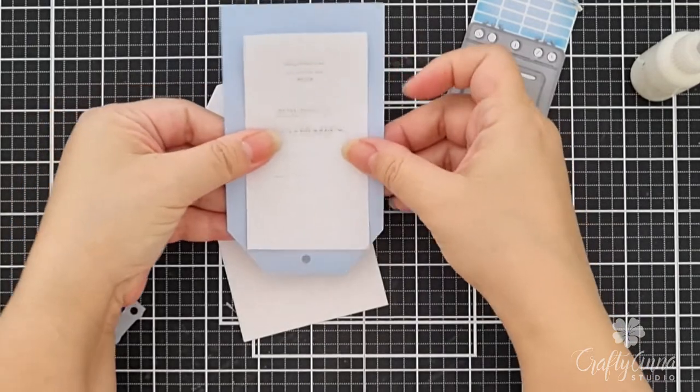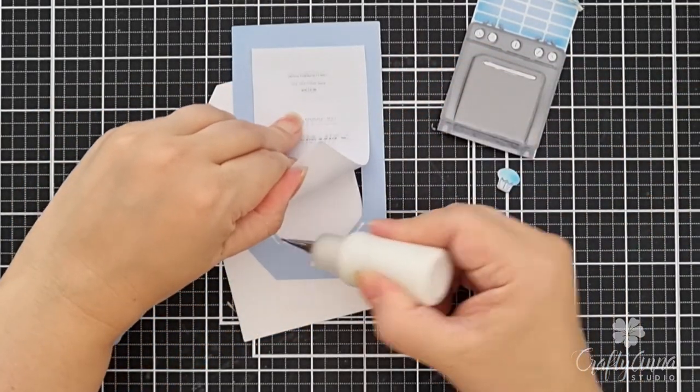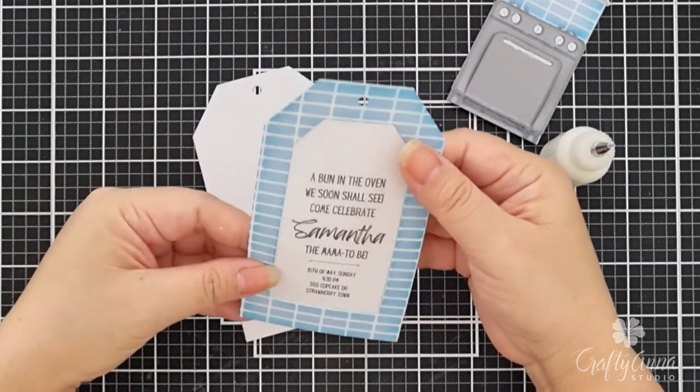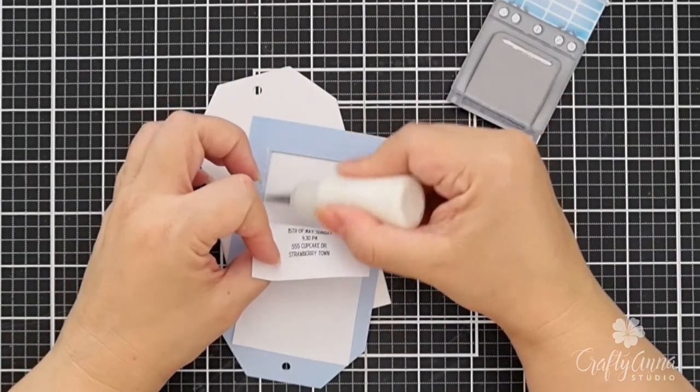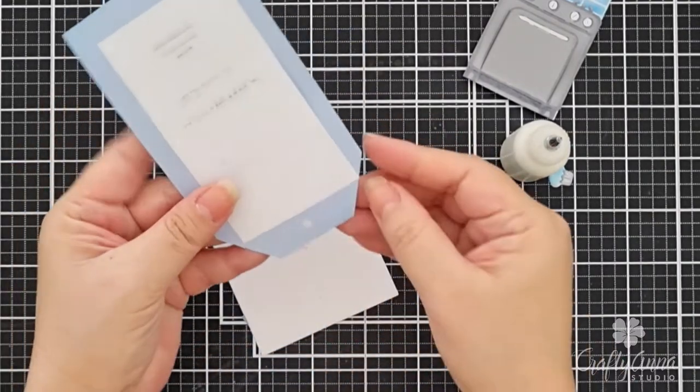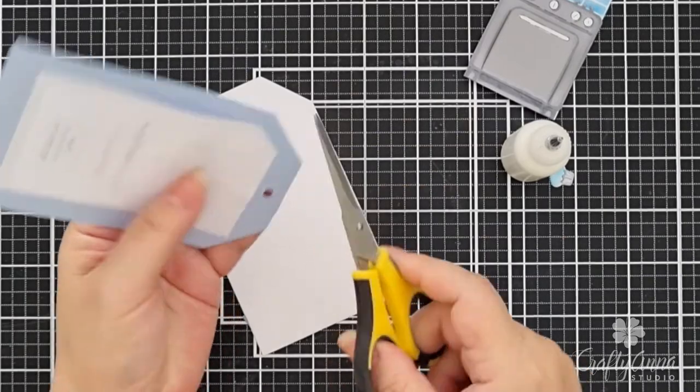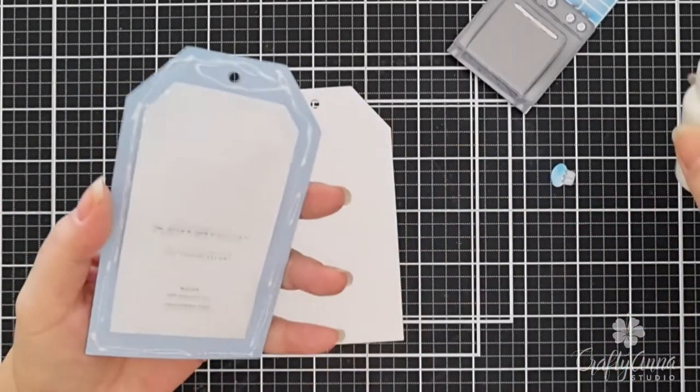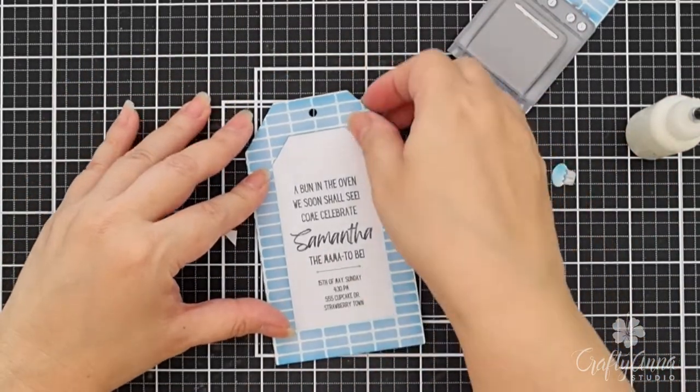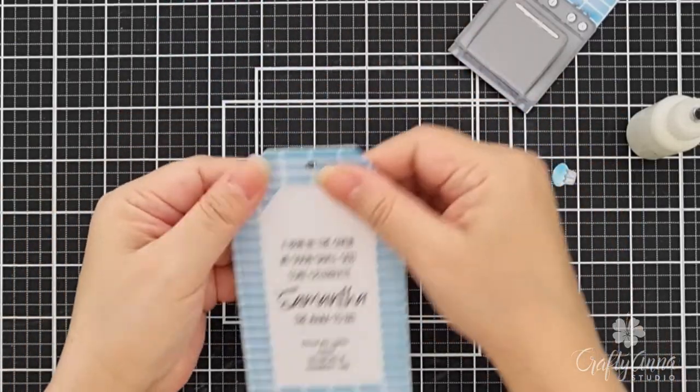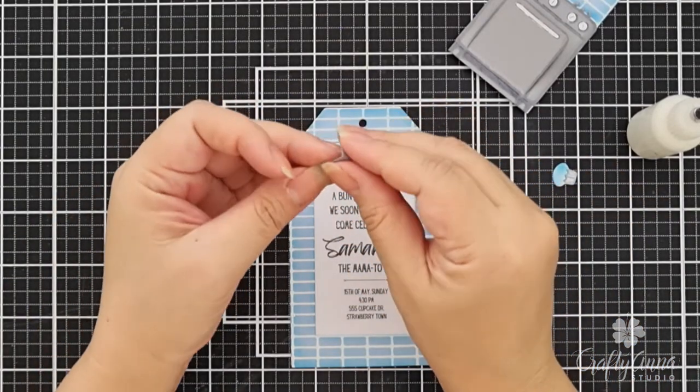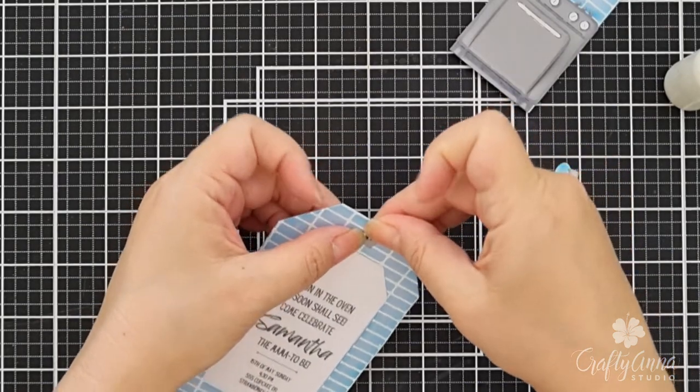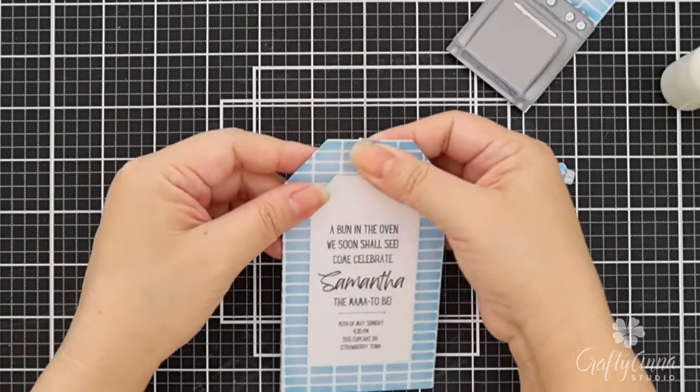For the bigger tag, I printed out the invitation and cut it down to size. I will center it onto the window of the tag. Then using liquid glue, adhere it onto the back of the tag by placing glue on all sides. Then I will adhere the whole tag onto another tag which I had die cut from white cardstock. I will add the hole topper and the cupcake element for the final touch.